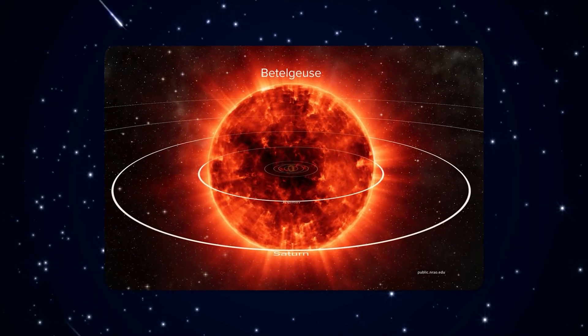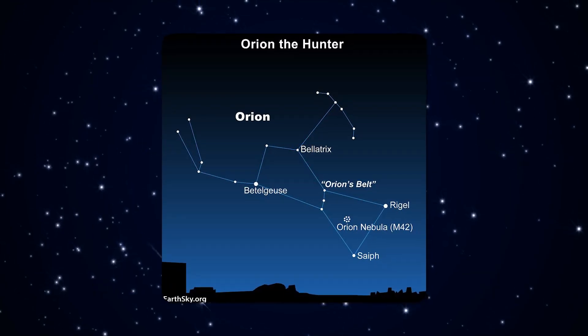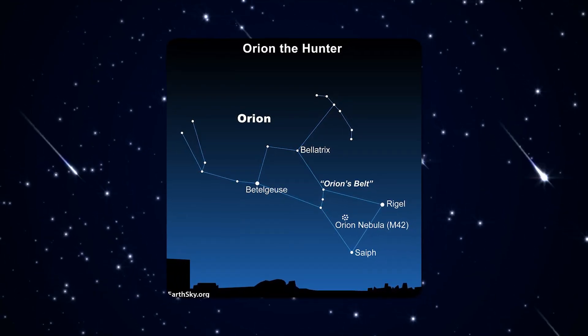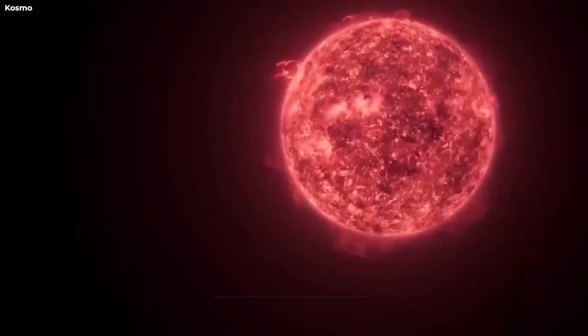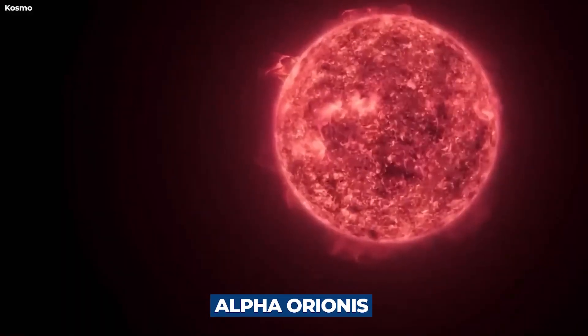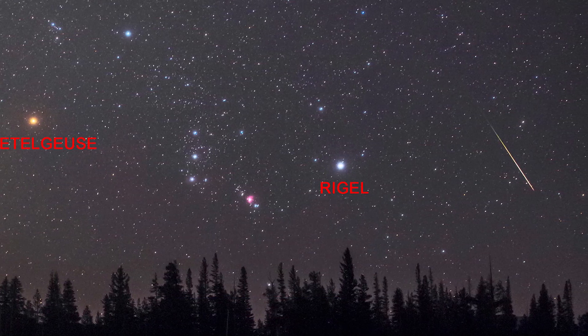Betelgeuse, a brilliant ruby-red sparkling star, may be seen in the winter constellation Orion the Hunter's top right shoulder. It is also known as Alpha Orionis, and is the second brightest star in the constellation after the blue supergiant Rigel.